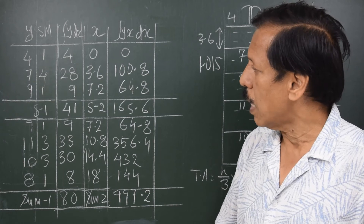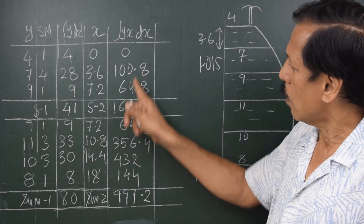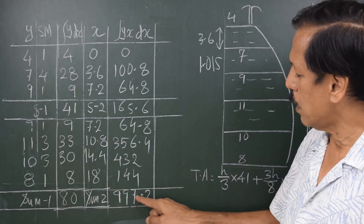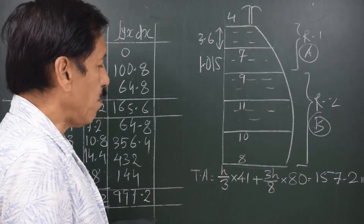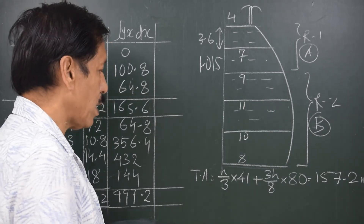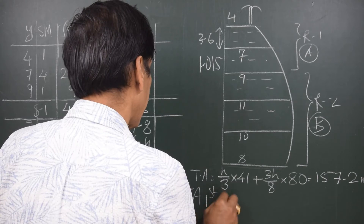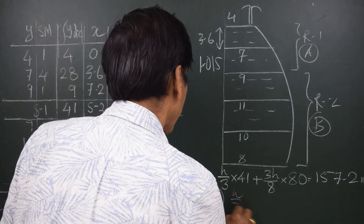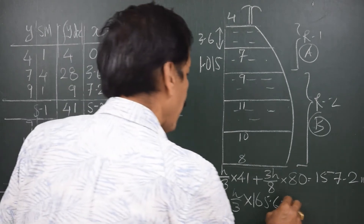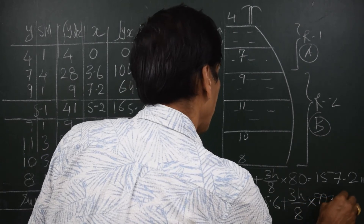In column five you have the product of columns three and four. The sum of products for rule one is 41, and the moment sum is 165.6. For rule two, the sum of products is 80 and the moment sum is 997.2. The total area is h/3 times 41 plus 3h/8 times 80.